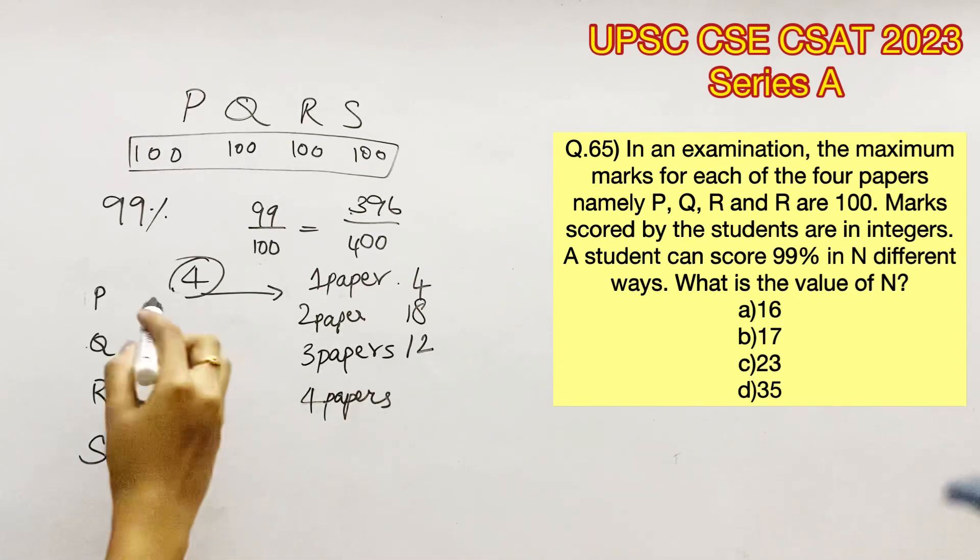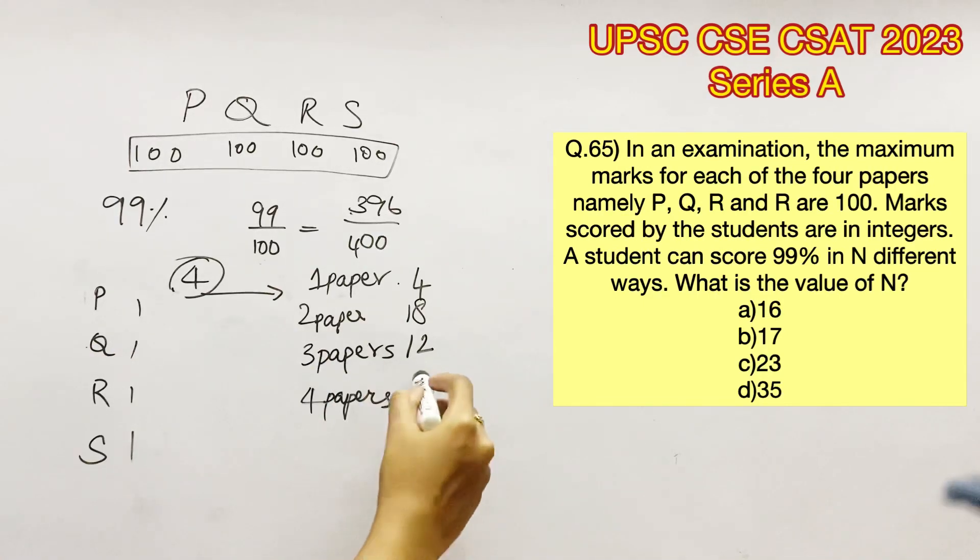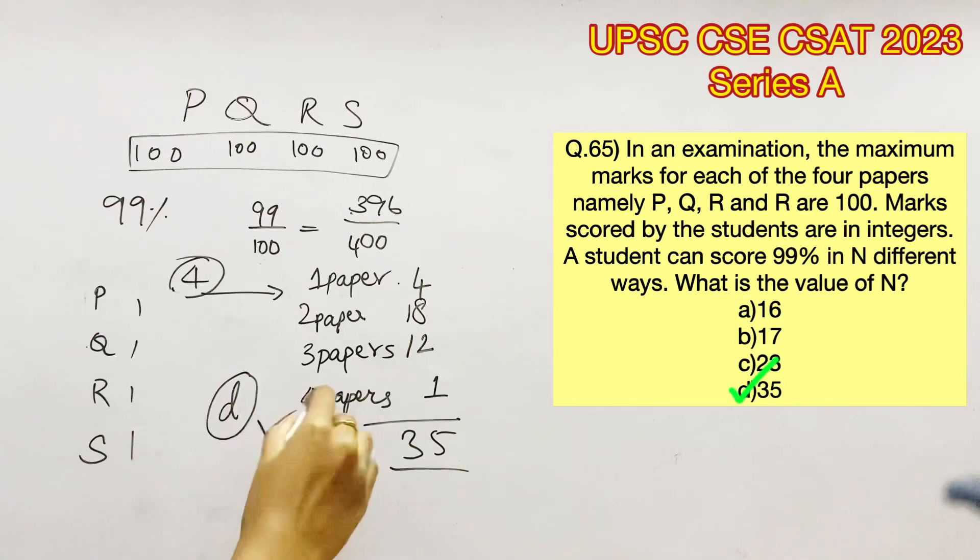Lastly, the marks can be lost in four different papers. That can be only in one way by losing a single mark in each paper. Adding all these up, we get 35. Therefore, option D is the right answer.